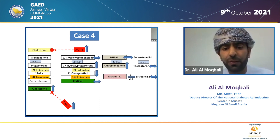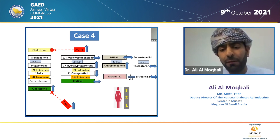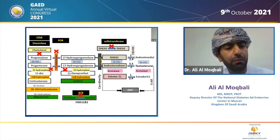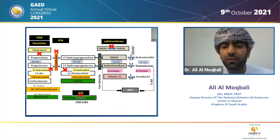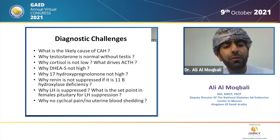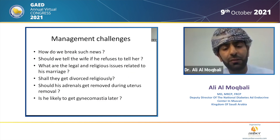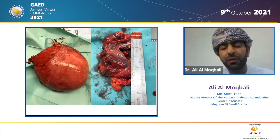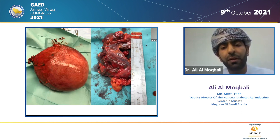Trying to fit this patient in the framework with female karyotype 3-2-1, excluding 3-beta, remaining with 21 and 11. The differential includes rare or atypical CAH. Very high 17-hydroxyprogesterone and androstenedione, and the case was proven to have 21-hydroxylase deficiency through genetic study. His post-surgical imaging showed a large uterus and bilateral adrenals around 18 centimeters — enormous adrenals. There are significant diagnostic and management challenges in this case.